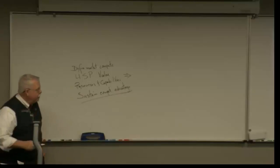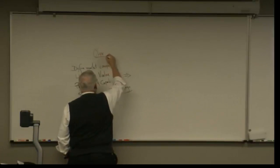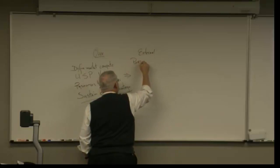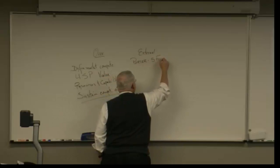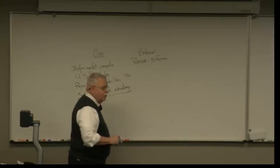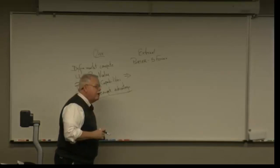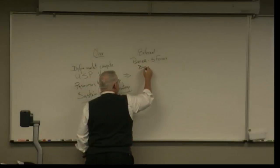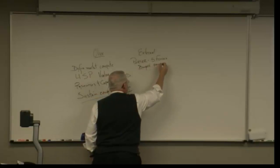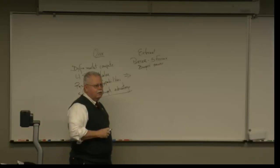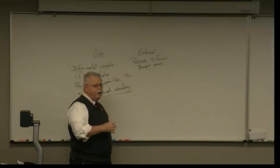Looking at the external environment, the first tool is the Porter Five Forces model — five forces external to your operation that will affect you. Starting with buyers: how much power do they have? If you sold brass pins to the US Army, they'd have total power — that's called monopsony, they're the only buyer. When buyers have a lot of power, your pricing may not be in your control and quality demands can raise your costs until your margins disappear.